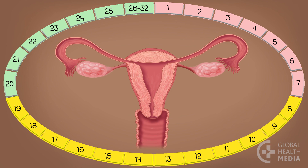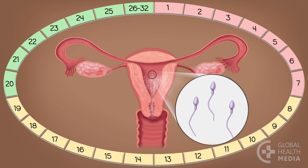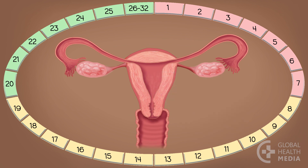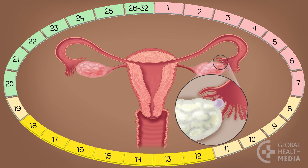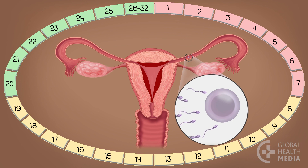When you have sex with a man, millions of sperm swim up in search of an egg. Sperm can stay alive inside you for up to five days and wait for the egg. Usually between days 12 and 18, an egg is released from your ovary and travels through the tube towards your uterus. The lining inside your uterus starts to grow to nourish a possible pregnancy. The egg lives less than a day; if it is joined by a sperm, a pregnancy can start.